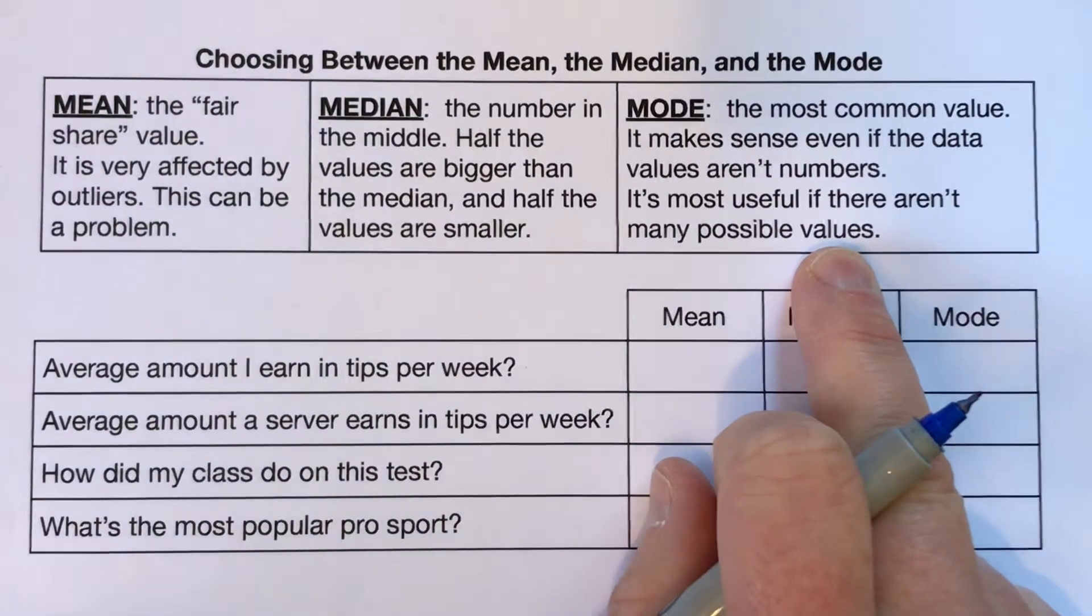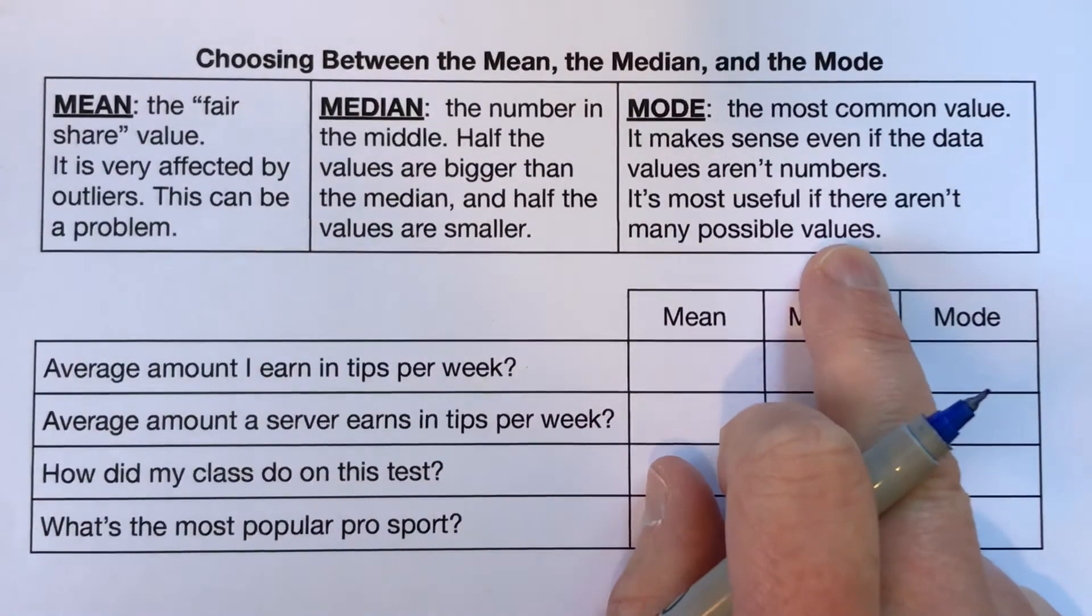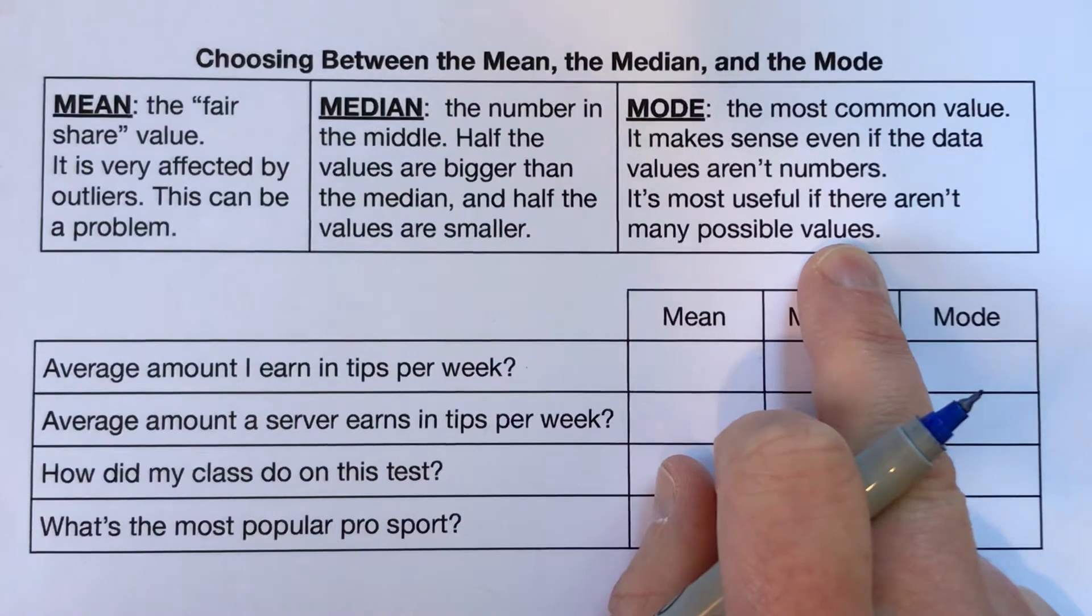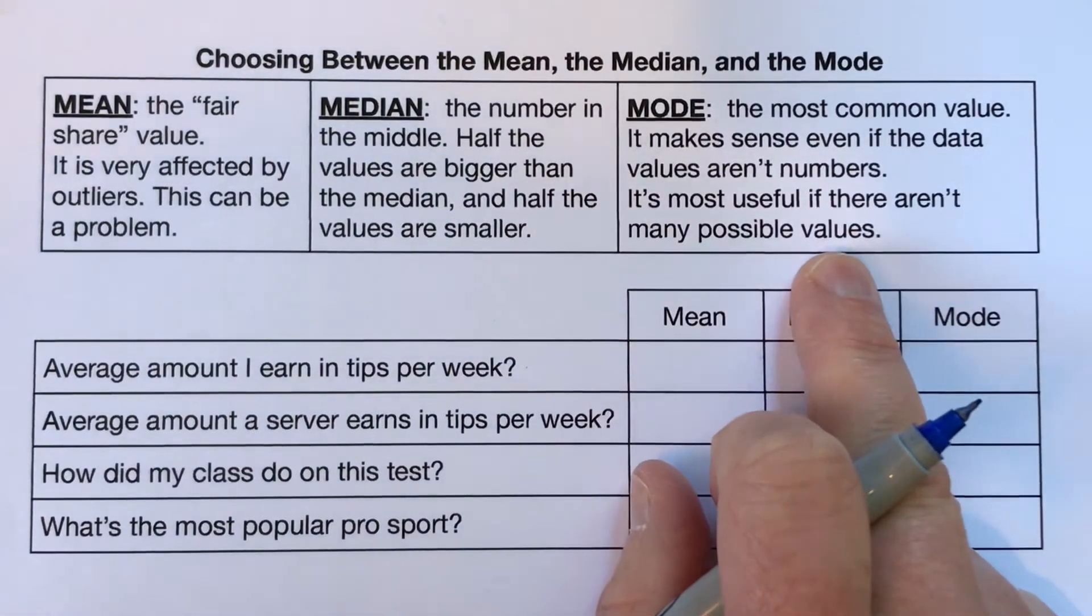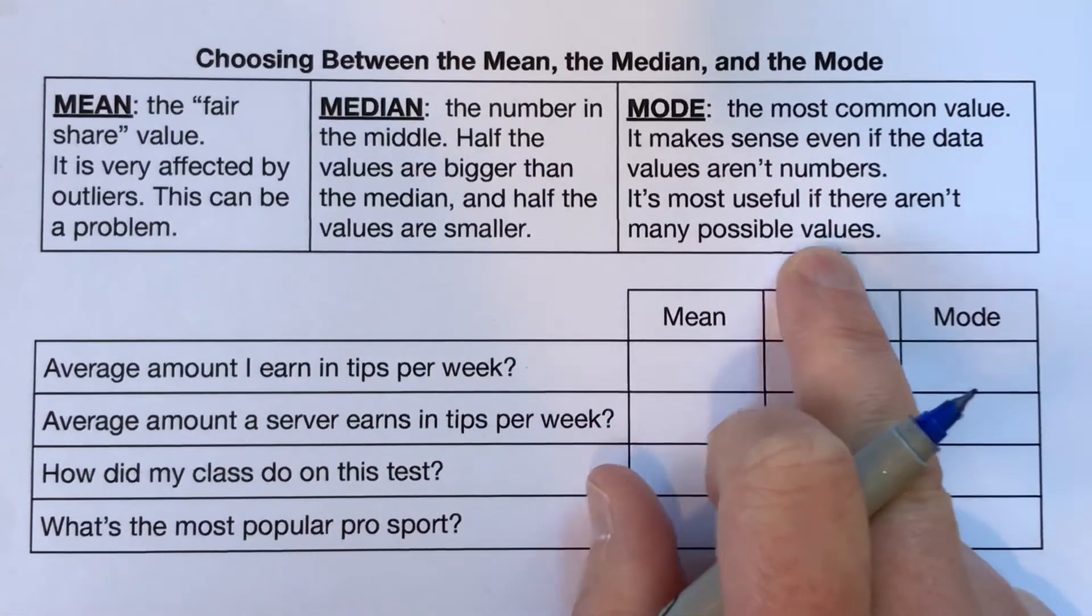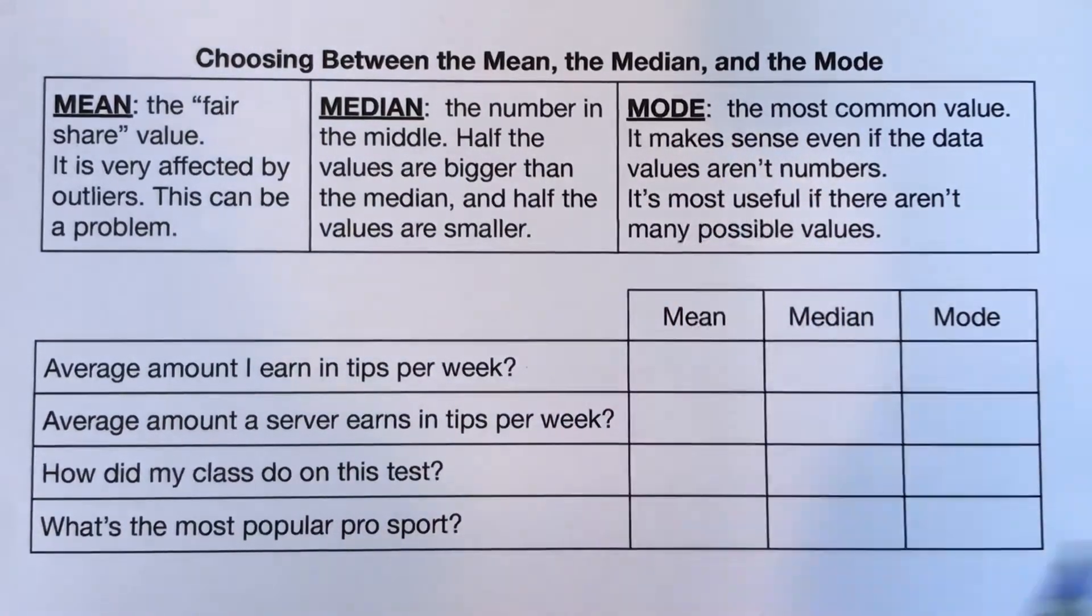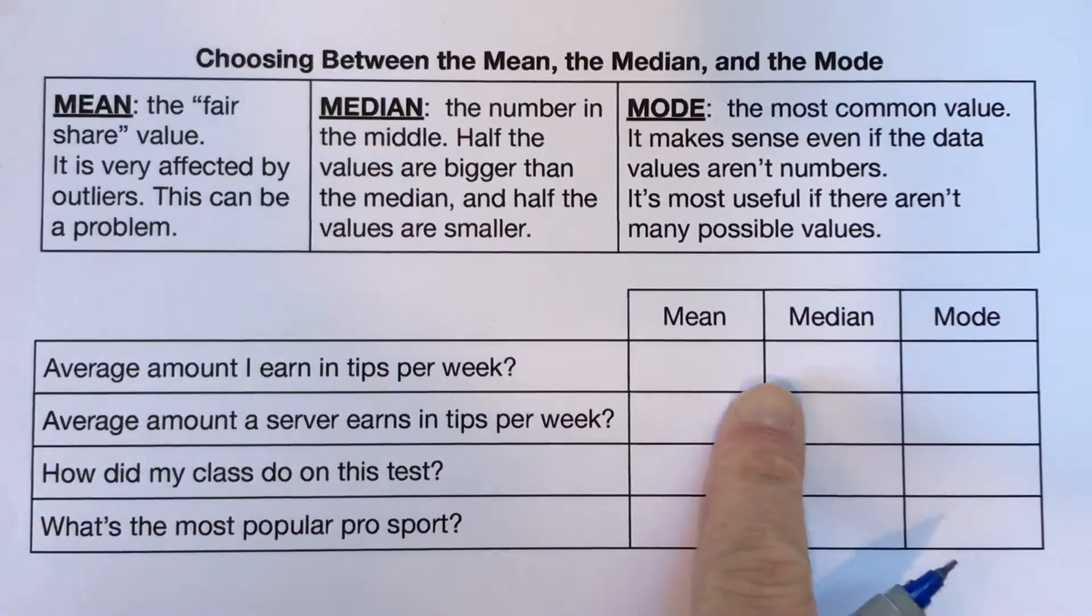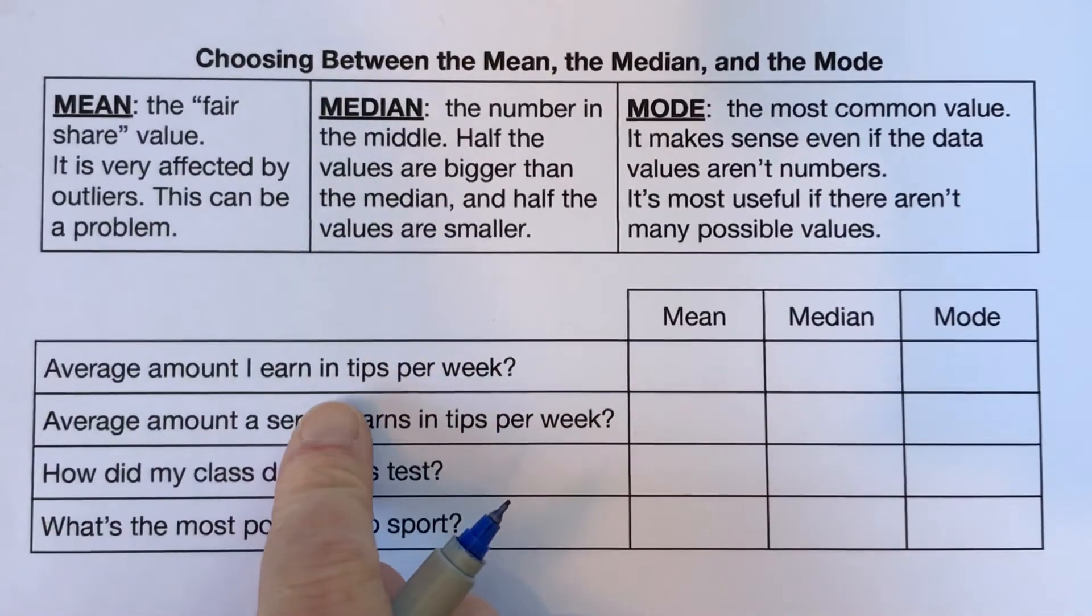For example, if you're talking about favorite colors and people are only allowed to choose the colors of the rainbow, then the mode might be really useful, might give you a lot of information. But if you're talking about a mark on a test and people could get any one of a hundred different percent marks, then maybe the mode is less useful. We're going to do four examples. The first two are actually really similar, but I'm going to give different answers for them, and that's why I wanted to show the two to compare them.